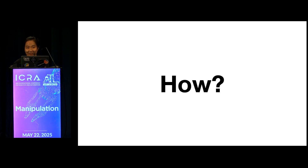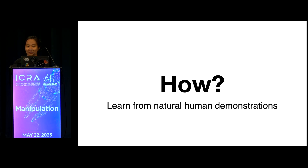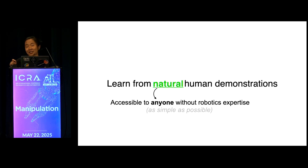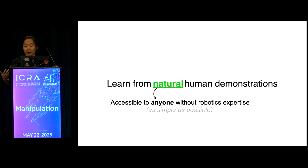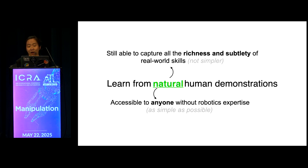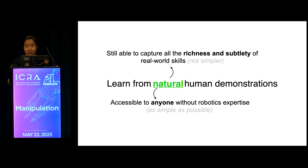There are many answers to how we can do that, but I think a big part of the answer is letting robots learn from natural human demonstrations. The word 'natural' is very important here: by making it natural, it makes the system accessible to anyone without robotics expertise, making it as simple as possible. At the same time, we want to make sure the system captures all the richness and subtleties of real-world skills instead of oversimplifying them into pick-and-place actions.